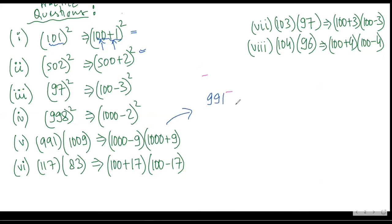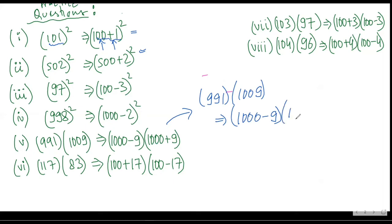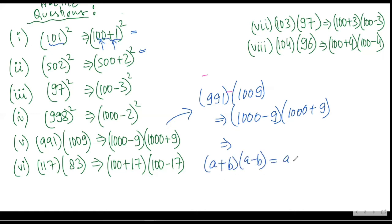If I have to multiply 991 by 1009, my life becomes easier if I write this as (1000 - 9) into (1000 + 9). Because then I can write this as a plus b into a minus b, which equals a² - b². So this would be 1000² - 9².